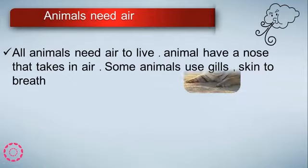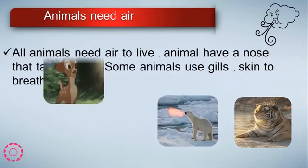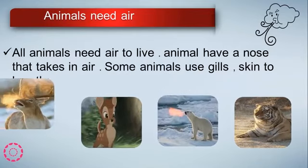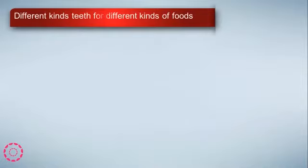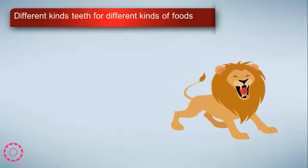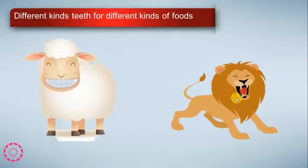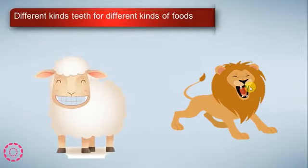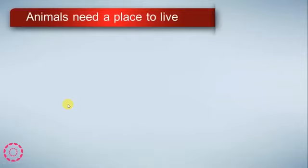Different kinds of animals all need air to live. They also have different kinds of teeth for different kinds of food. Sharp teeth are used to eat the flesh or meat of other animals. The sheep has flat teeth and can eat grass.